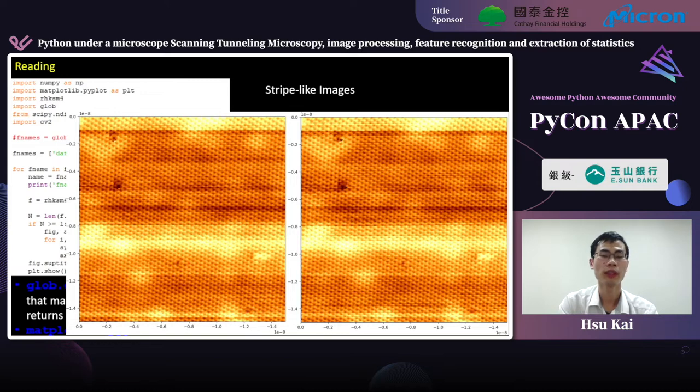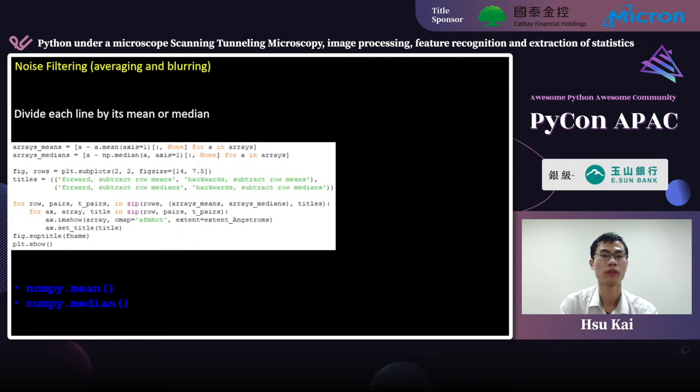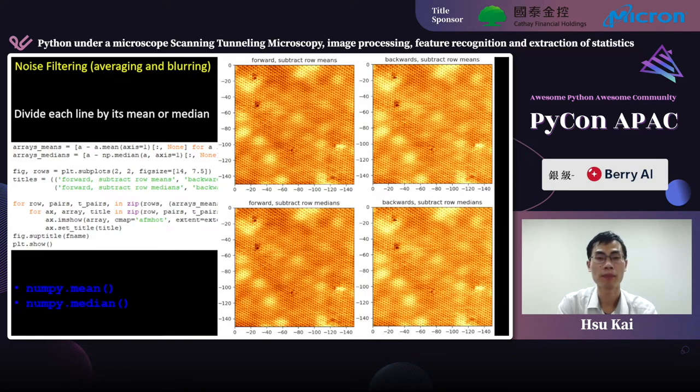So, a simple and common way to address this issue is to apply mean or median subtraction. Here, I use NumPy mean and NumPy median to offset those stripes. NumPy mean and NumPy median compute the average and median of the given data along the specified axis. So, after processing, as you can see, those stripes are clearly removed.